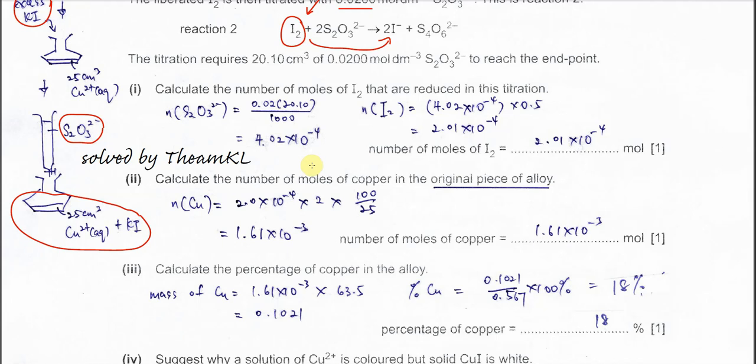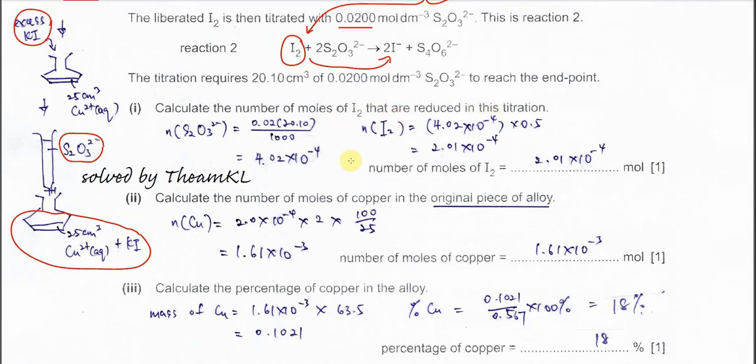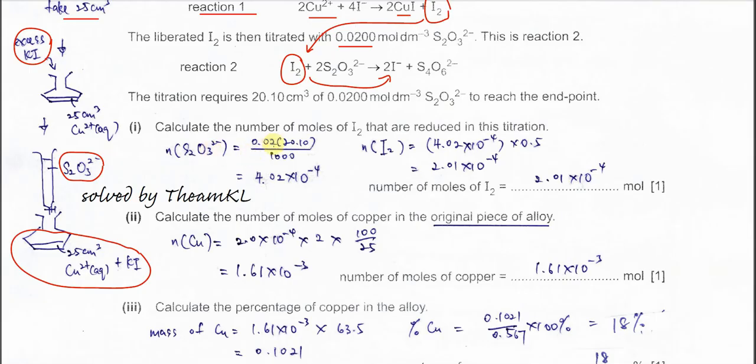Part 1, calculate the number of moles of iodine that reduce in this titration. This is very easy. First calculate the moles of thiosulfate used. Use MV over 1000: 0.02 times the volume over 1000, we get the moles of thiosulfate. We know iodine is actually half the moles of thiosulfate because the mole ratio is 1 to 2. So the mole of iodine must be half this mole, 2.01 times 10 to the -4.